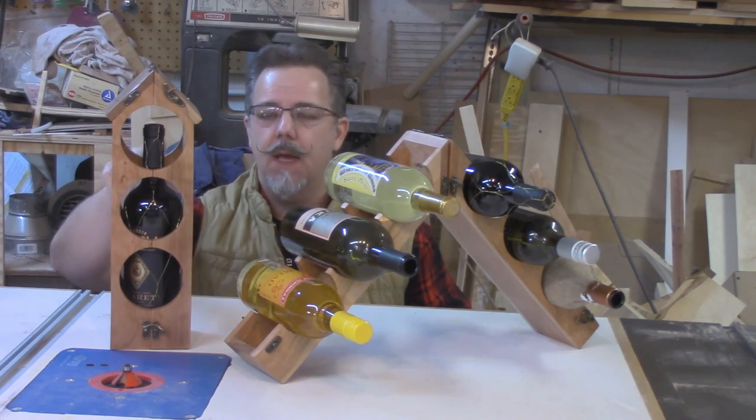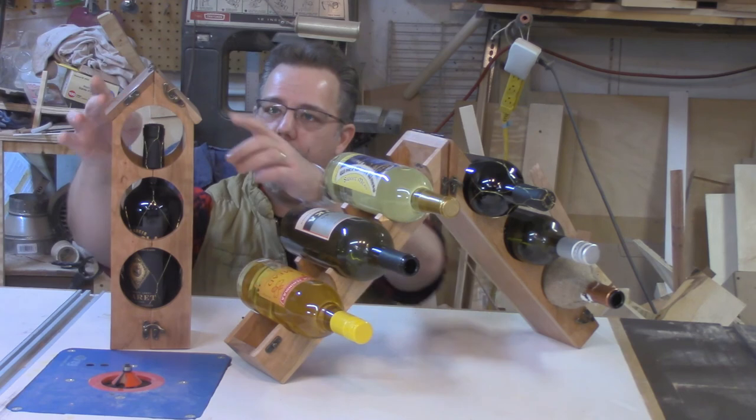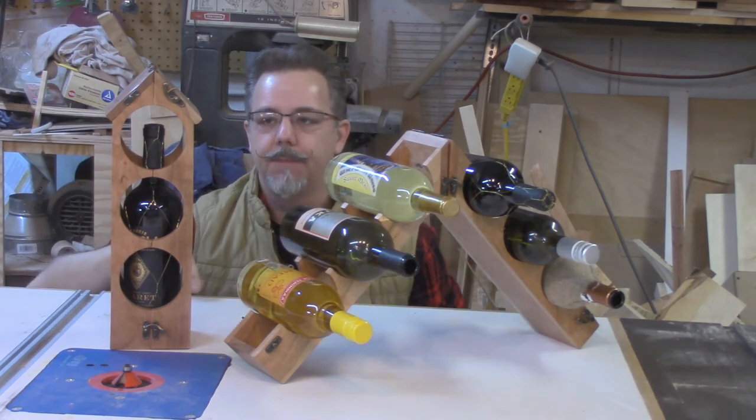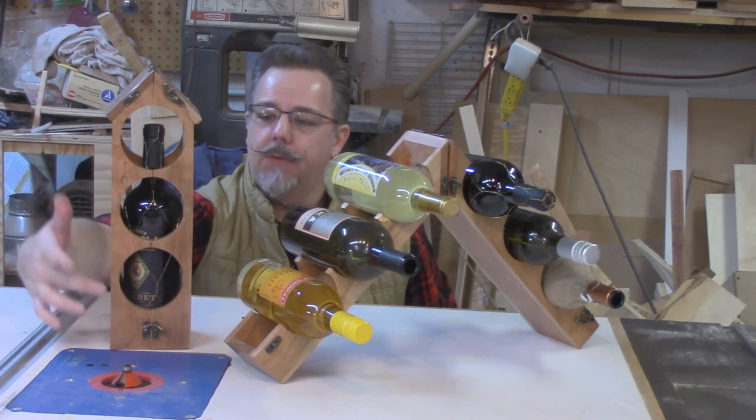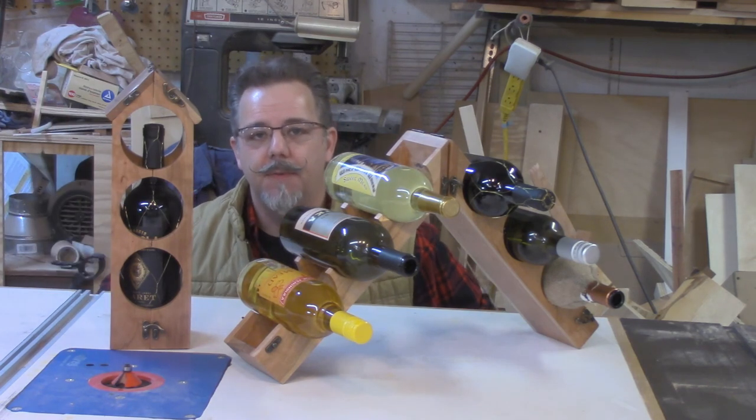Today we're working on Christmas gifts. I call these the Birdhouse Wine Holders. You can see they kind of look like a birdhouse here. Then it flips around, you can hold wine this way. You could also put wine bottles through these three holes. So now I'm going to get started and pretend I'm Santa's little helper.